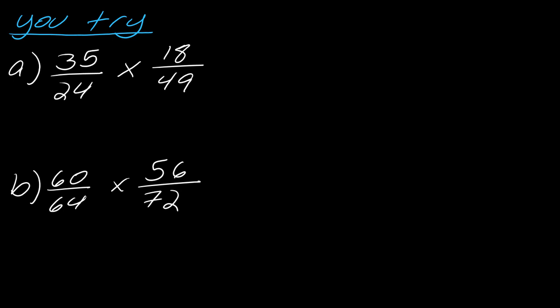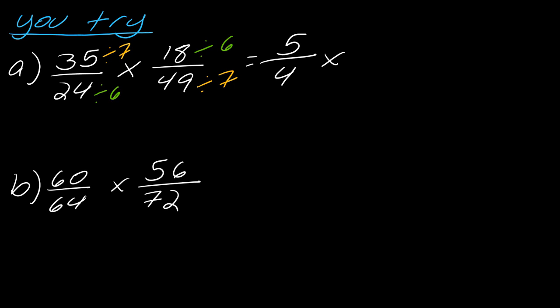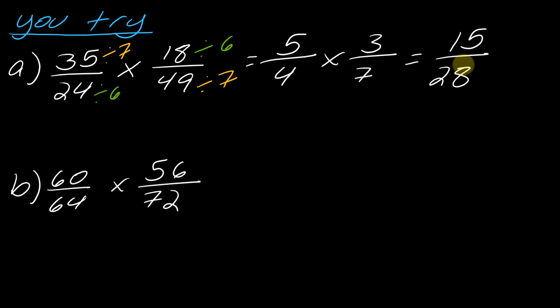Pause and try these two examples, then hit play when ready. For example G: 35 and 49 are both divisible by 7, and 24 and 18 are both divisible by 6. So 35 ÷ 7 = 5, 24 ÷ 6 = 4, 18 ÷ 6 = 3, 49 ÷ 7 = 7, giving us 15 over 28. If you chose different divisors you may have needed to simplify at the end, but you should arrive at the same answer.